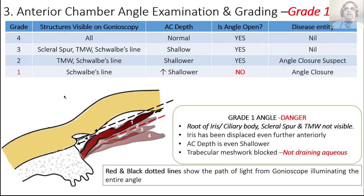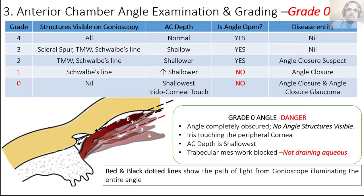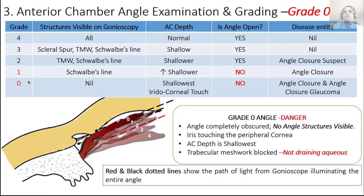Displacing the iris to position 1: you can only see one structure — Schwalbe's line. The trabecular meshwork can no longer be seen, meaning it's not functioning and aqueous is no longer getting out of the eye. This is now a closed angle. The anterior chamber is even shallower. Displacing to grade 0: the cornea and iris are touching — you can't see anything at all. This is seen in angle closure and angle closure glaucoma.